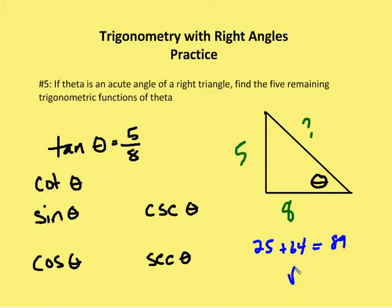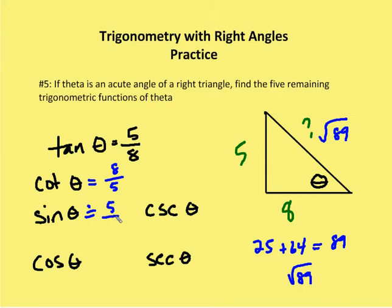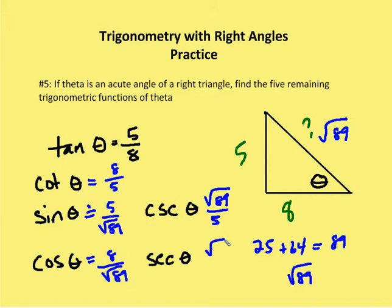So the hypotenuse is going to be the square root of 89, and I'll leave it as the square root of 89. Cotangent is just the reciprocal of tangent: 8 over 5. Sine of theta is 5 over the square root of 89. Cosecant is the reciprocal: the square root of 89 over 5. Cosine is the adjacent side, 8, over the hypotenuse, the square root of 89. And secant is the reciprocal of that: the square root of 89 over 8.